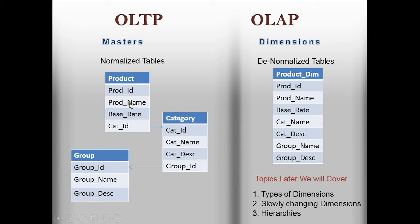Here is a normalized table and a denormalized table — they represent the same data. A table is broken into three: a category contains many products, a group contains many categories. But if you join these three tables with a lab join, they form a single schema — a denormalized table.